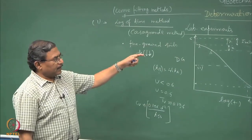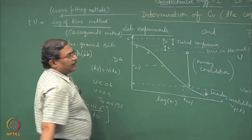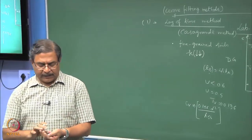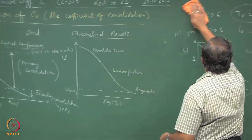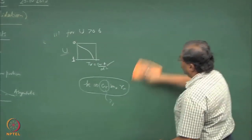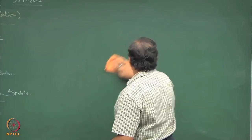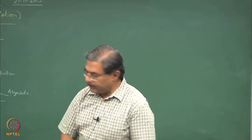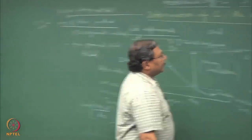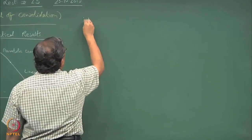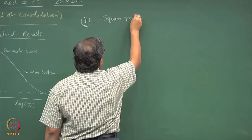Please refer to a book to understand the different aspects of the geometry done here; that would give you a better idea about how the construction is done. The second method is known as the square root of time method. This is the first method of curve fitting to determine the cv value, and the second method is the square root of time.